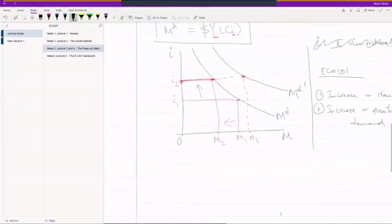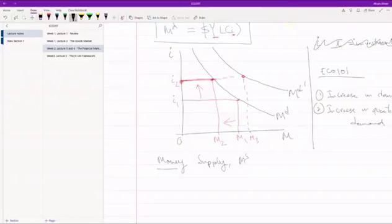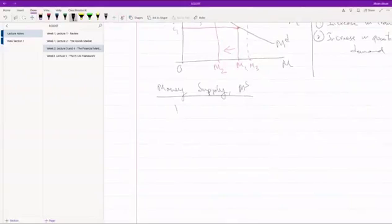The next thing we're going to talk about is money supply, which is denoted as MS. What you're going to see is the same thing: we have M here, we have I here. Money supply is a straight line.